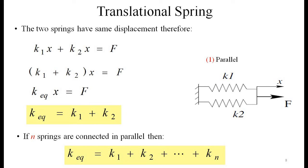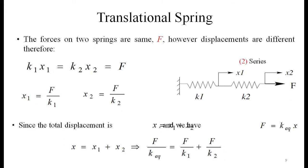For n springs connected in parallel, the equivalent stiffness is k_eq = k1 + k2 + … + kn. So for parallel connection, we add all the individual stiffnesses to get the equivalent stiffness.